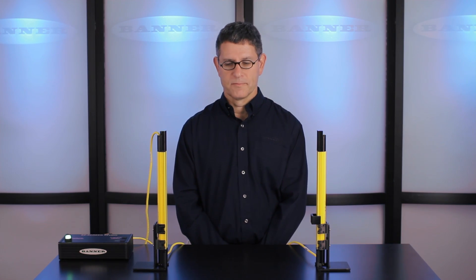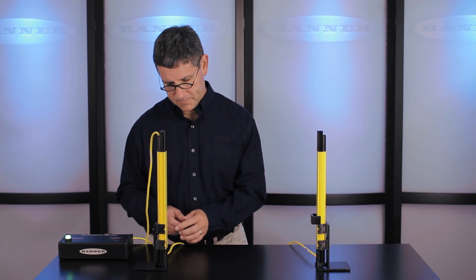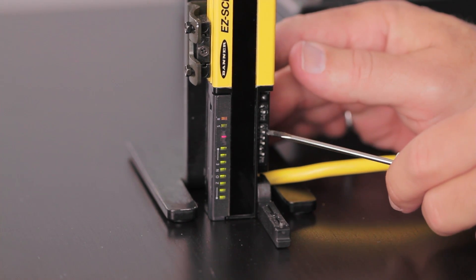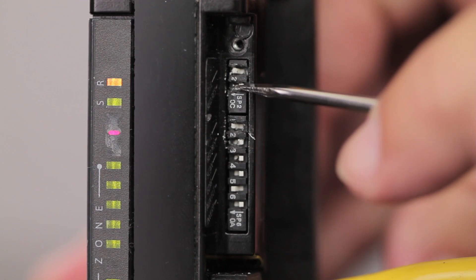Configuring the EasyScreen LP for fixed blanking is the same as the EasyScreen. The only difference is the location of the dip switches. You'll be using the top four dip switches to set the configuration.